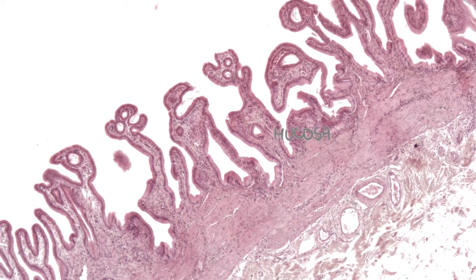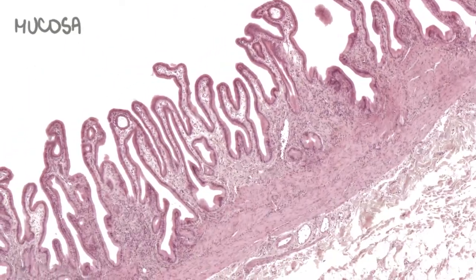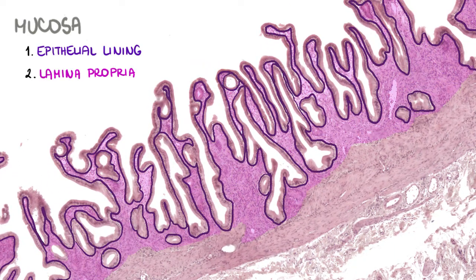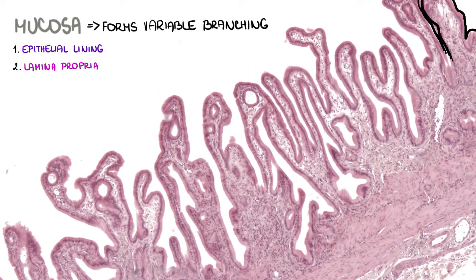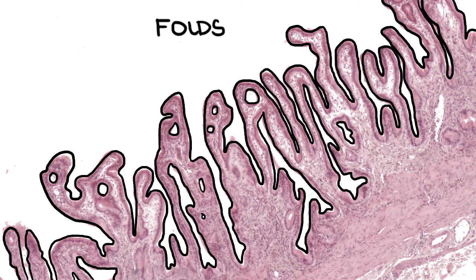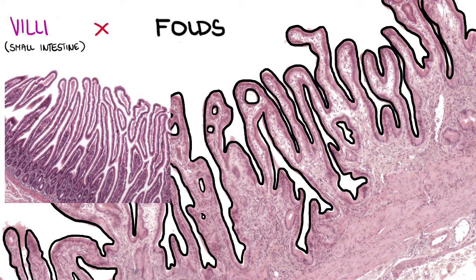The mucosa is composed of two layers — an epithelial lining and lamina propria. It forms variable branching folds, which are more prominent when the gallbladder is not distended. Folds are different from villi, which are situated in the small intestine. The difference is that folds interconnect and branch, whereas villi don't.